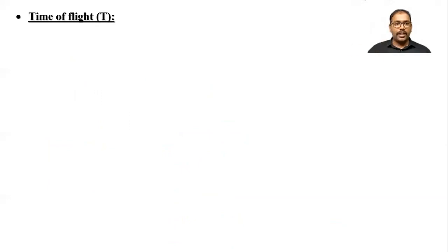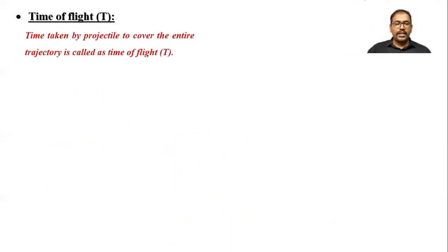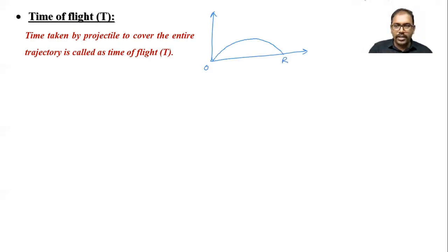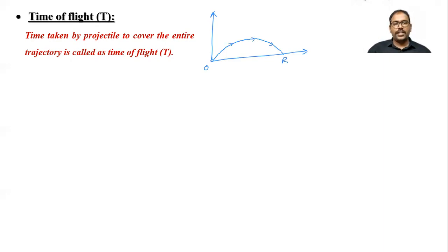We represent time of flight by capital T. Time of flight means the time taken by a projectile to cover its entire trajectory. If we consider the y-axis and x-axis, the time taken by the projectile to go from point O to point R, following its path through space, is called the time of flight.